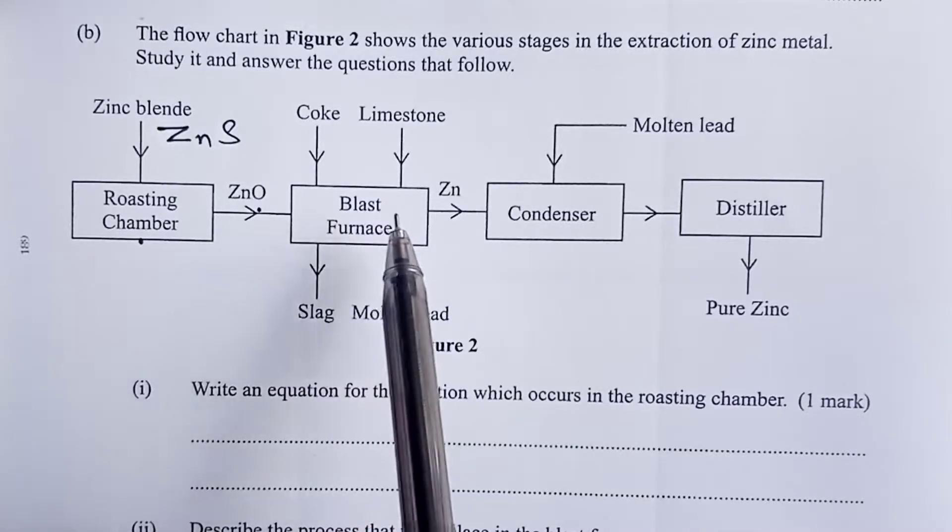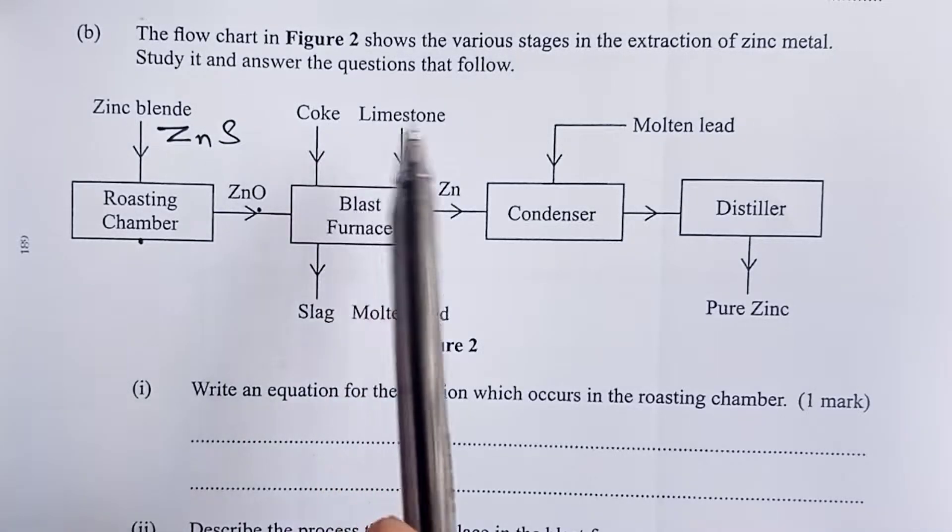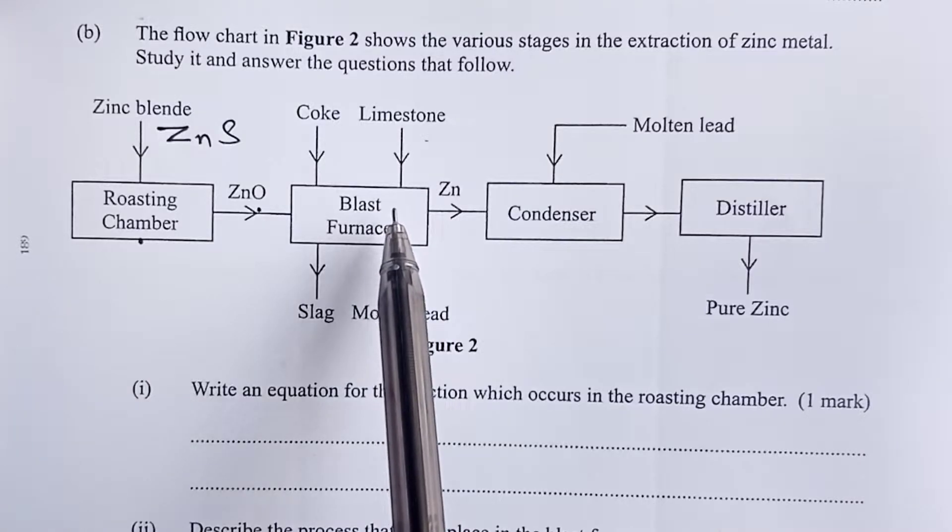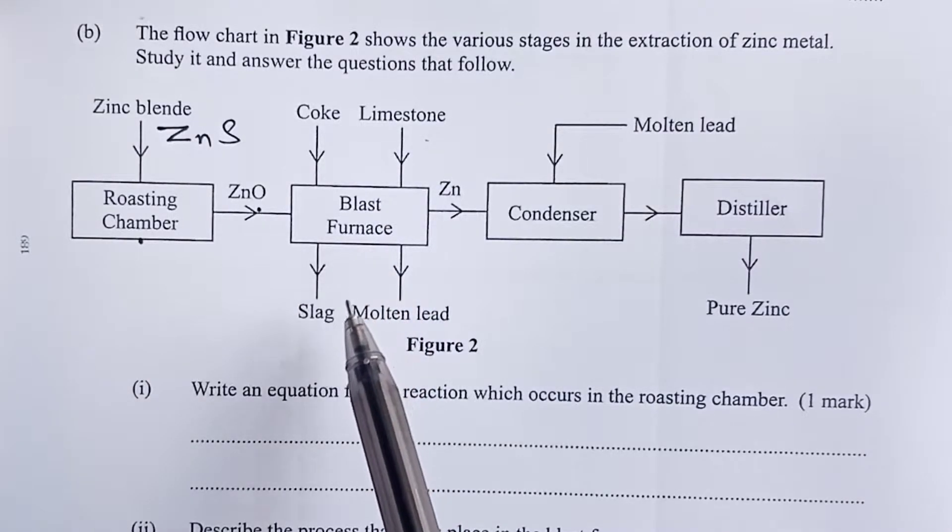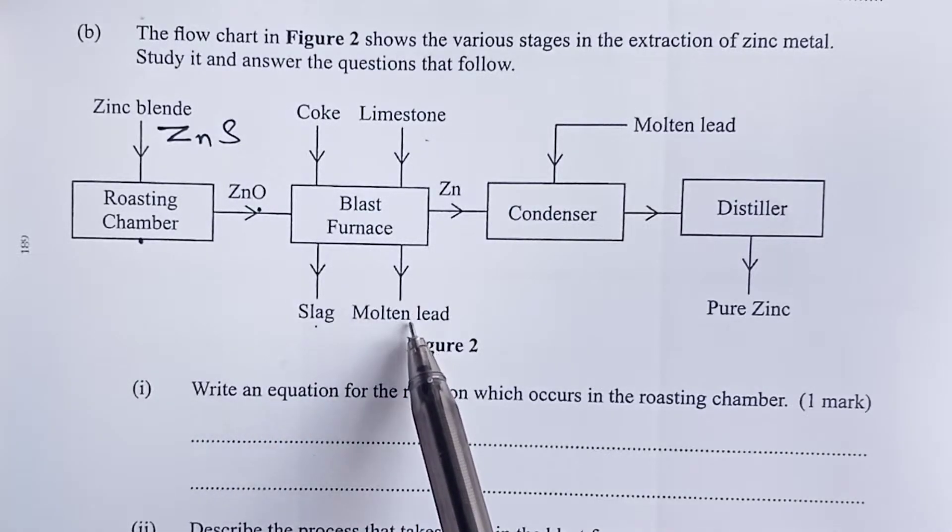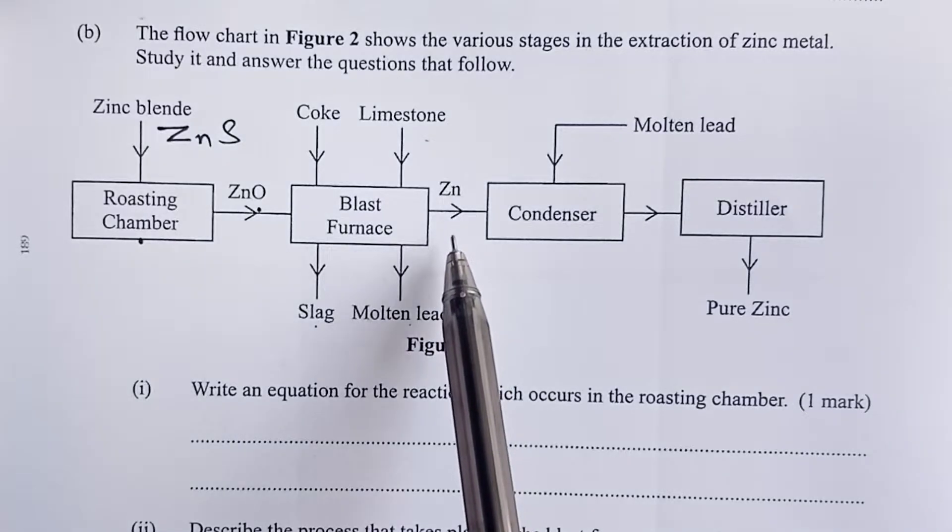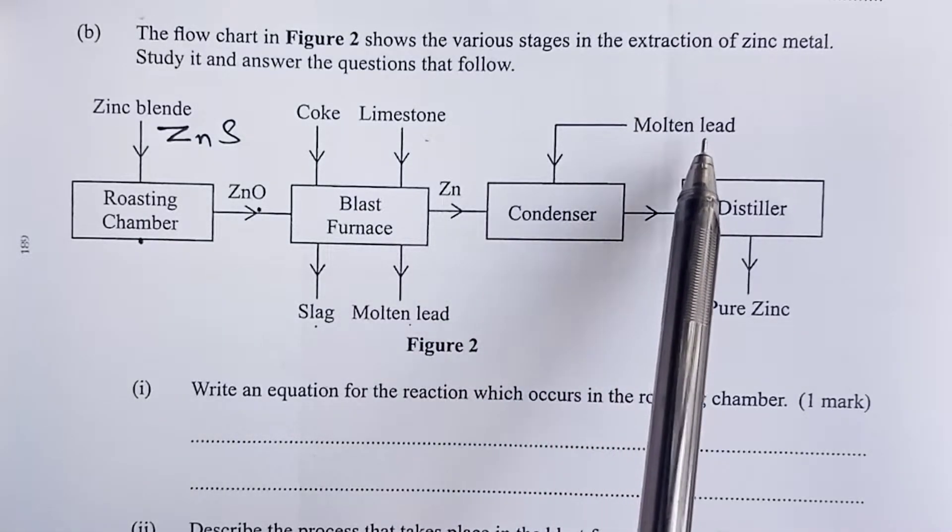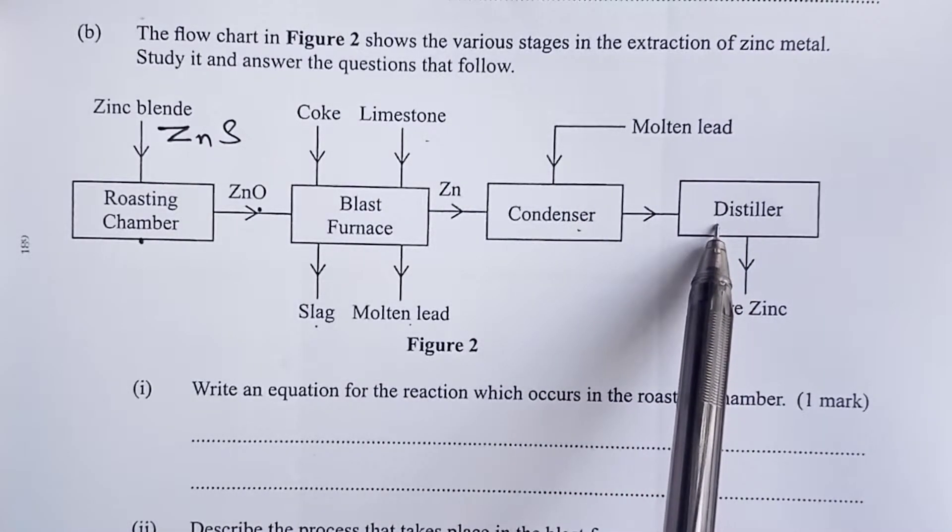Once we obtain our zinc oxide, we take it to the blast furnace where we mix it with coke and limestone. Once the blast furnace processes have taken place, slag leaves, molten lead leaves and zinc as well. The zinc is led to a condenser where we introduce molten lead and then direct it to a distiller.